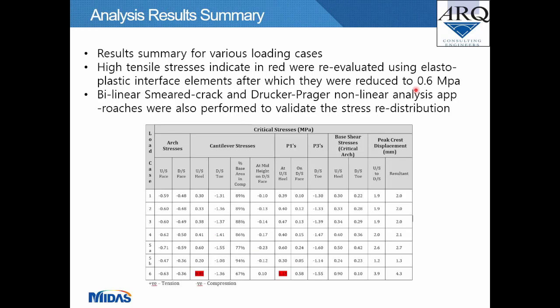The analysis results summary table covers all loading cases. High tensile stresses indicated in red were re-evaluated using elasto-plastic interface elements, after which they were reduced to below 0.6 MPa. Bi-linear smeared crack and Drucker-Prager non-linear analysis approaches were also performed to validate stress redistribution. The table shows all analysis output results for Load Cases 1 to 6, indicating arch stresses, cantilever stresses, P1 stresses (tensile), P3 stresses, base shear stresses, and crest displacements. Positive stresses indicate tension, negative stresses indicate compression.